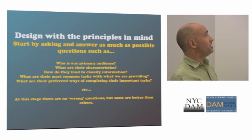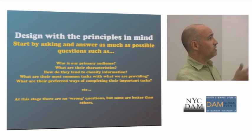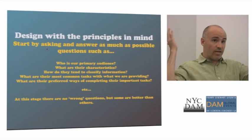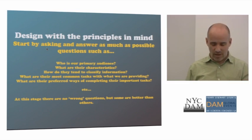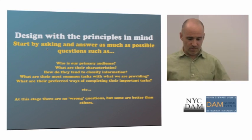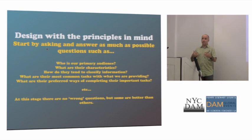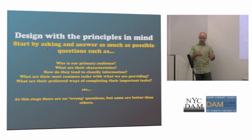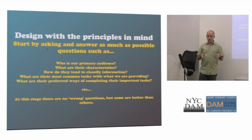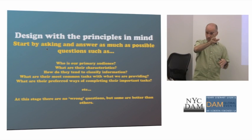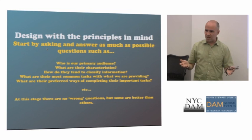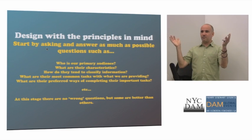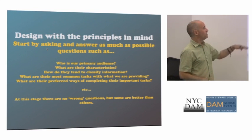Designing with the principles really starts by asking questions: who is our primary audience? What are their characteristics, their age range? The example I'll show you: people in their 20s were just boom, done. Older people had a lot more trouble because the mental model they come with is very different from a 20-something digital native who grew up in a world where interaction with information is three-dimensional and the idea of hidden information is normal. But for many of us, hiding information is not how we grew up.